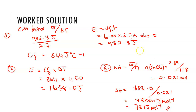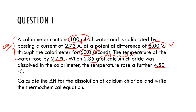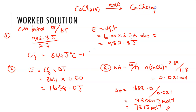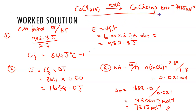Then to write the thermochemical equation, it was for the dissolution of calcium chloride. So we write the equation for the dissolving: CaCl₂ solid, because it starts out as solid if we're going to dissolve it, in the presence of H₂O, turns into CaCl₂ aqueous. It caused the temperature to go up, so it's going to be negative 78 kilojoules per mole. And then we have finished the equation because we have written the thermochemical equation.